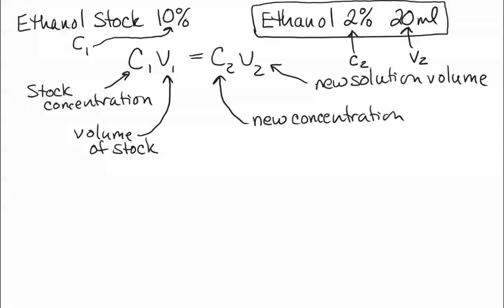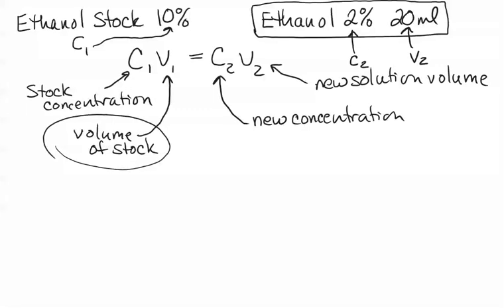So the only thing we don't yet know is how much of our stock do we need to be able to make 20 milliliters of our 2% ethanol solution. Let's go ahead and plug in the values we already know. C1 is 10%. We're going to multiply that by V1, which we don't know yet but we're going to solve for.